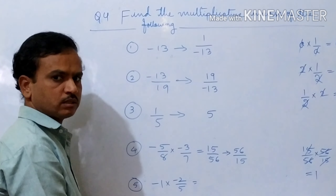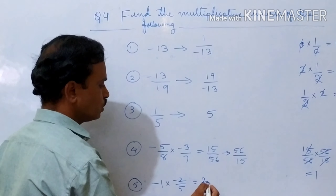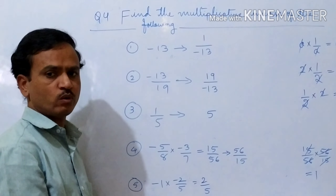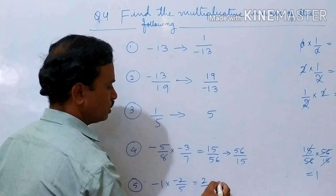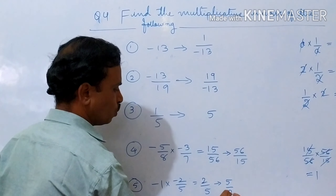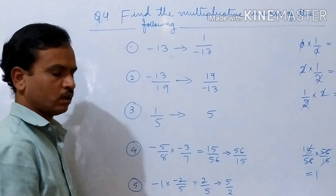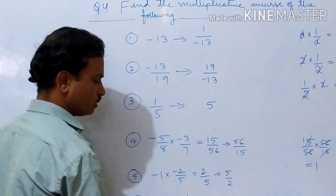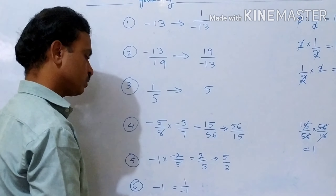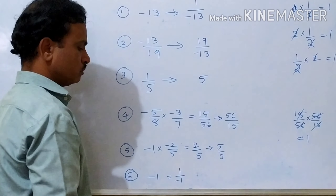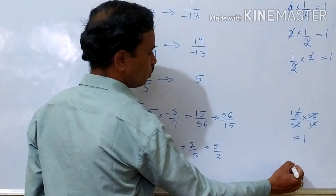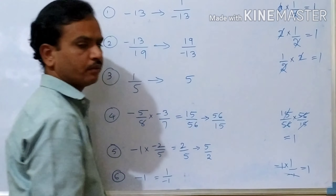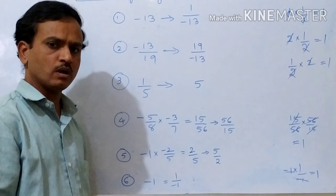Minus into minus is plus: 1 times 2 is 2, giving 2 by 5. The multiplicative inverse of 2 by 5 is 5 by 2. Then minus 1: its reciprocal is 1 divided by minus 1. Multiplying minus 1 times 1 divided by minus 1, both cancel to give 1, the multiplicative identity.